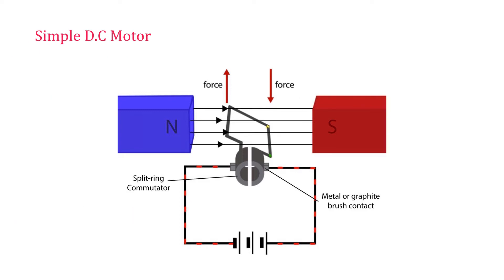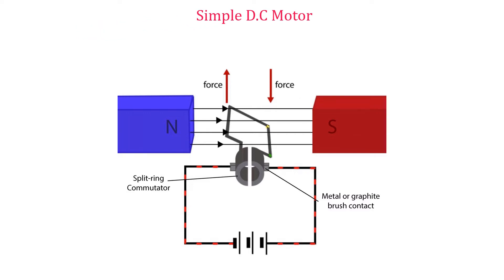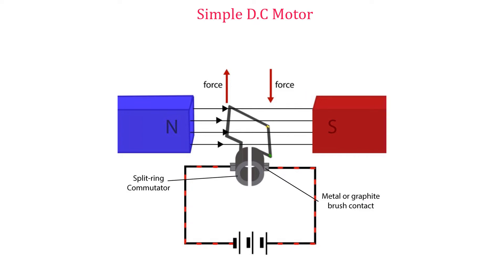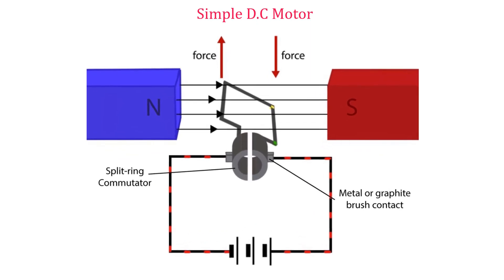The electric motor is based on the application of the fact that when a current-carrying conductor is put in a magnetic field, a force is produced. The DC motor works using the same principle. It consists of a rectangular coil mounted on an axle which can rotate between the poles of a magnet. The ends of the coil are connected to split rings called the commutator.